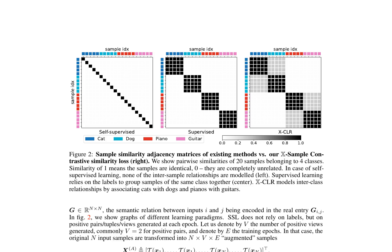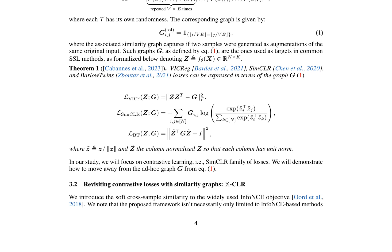The authors introduce the concept of a semantic relation graph G, where G ∈ R^(N×N), encoding the relationship between inputs i and j. In self-supervised learning, G is defined such that G equals 1 if two samples are generated as augmentations of the same original input. Theorem 1 from Cabanz et al. 2023 expresses VIC-reg, SIM-CLR, and Barlow Twins' losses in terms of the graph G, formalizing them as L_VICReg(Z, G), L_SimCLR(Z, G), and L_BT(Z, G) respectively.